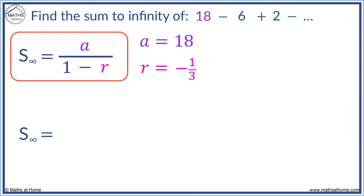The sum to infinity equals 18 over 1 minus minus 1 third. We need to be careful when we have a negative r value. 1 minus minus 1 third means 1 plus 1 third, which equals 1 and 1 third. Working out 18 divided by 1 and 1 third, we get 13.5.